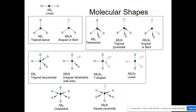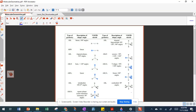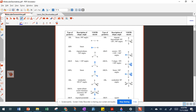Replacing two bonds with lone pairs in a five-region molecule gives a T-shape; replacing three gives a linear shape. For six regions: six bonding regions gives an octahedral shape. Replace one bonding region with a lone pair and you get a square pyramidal shape.